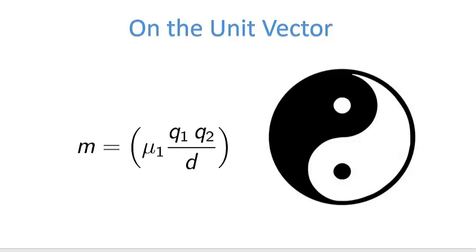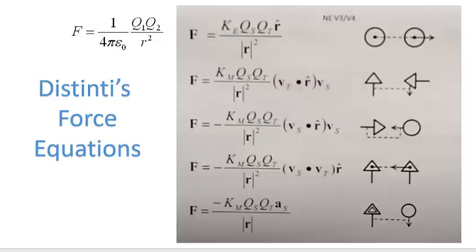In the last video I showed you a bit of logic that led to this equation, which basically says that the mass of a particle is equal to the permeability of free space times two charges over some distance. The main reason I'm making this video is to deal with the unit vector, because Robert Distinti actually places the unit vector into his force equations.